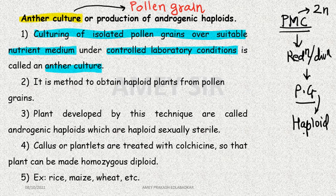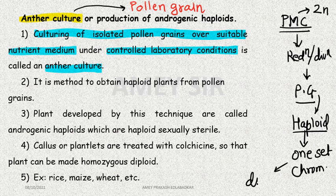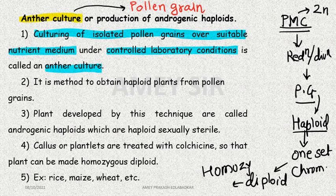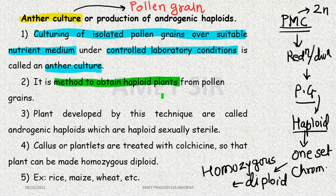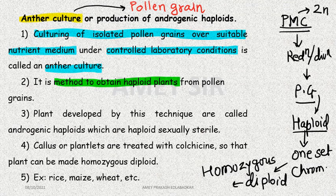Pollen grains contain only one set of chromosomes. Making this haploid structure diploid and achieving homozygosity through it is practically easy to say but difficult to do. This is the method to obtain haploid plants, which is usually not possible through conventional techniques. Plants developed by this technique are called androgenic haploids.